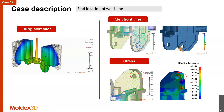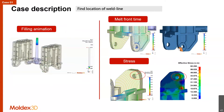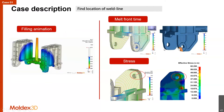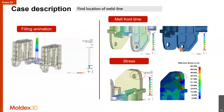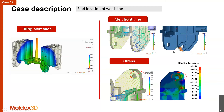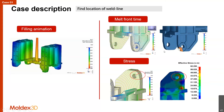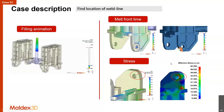What they want to do here is to avoid the weld line being located right at the stress hotspot. As we know, the structural strength at the weld line location is weaker, so that's why they want to avoid the weld line locating just at the stress hotspot.